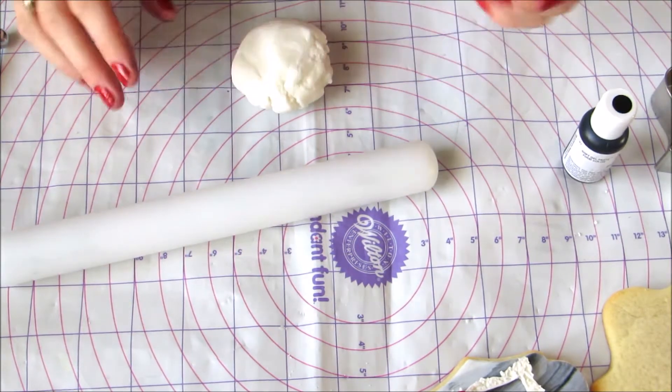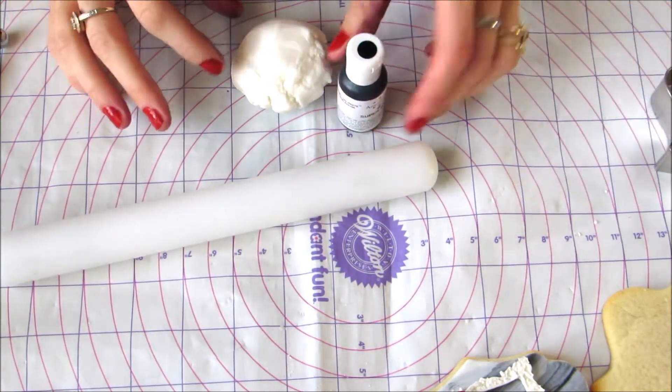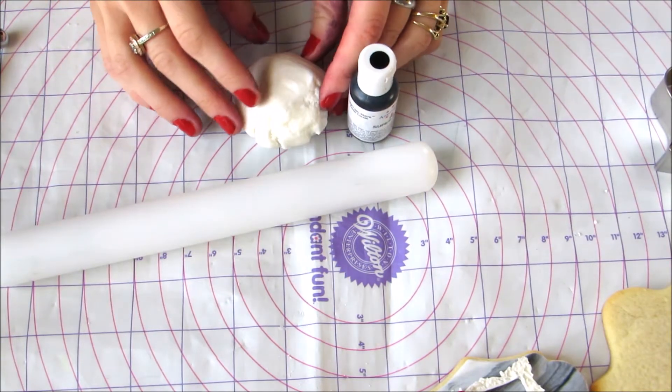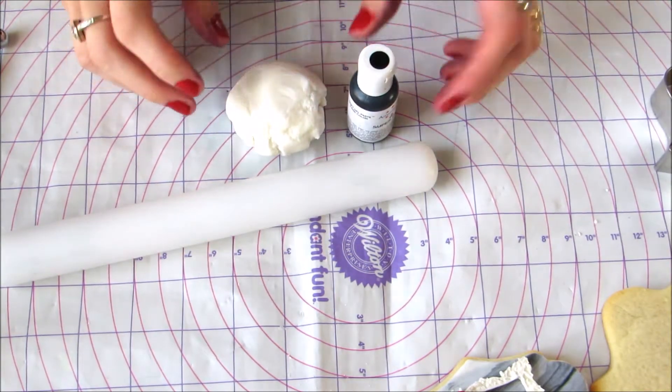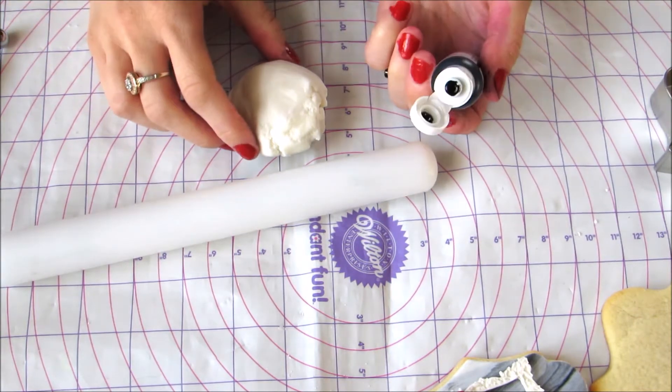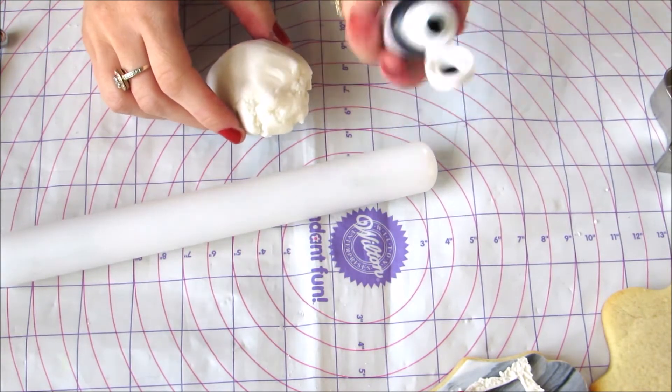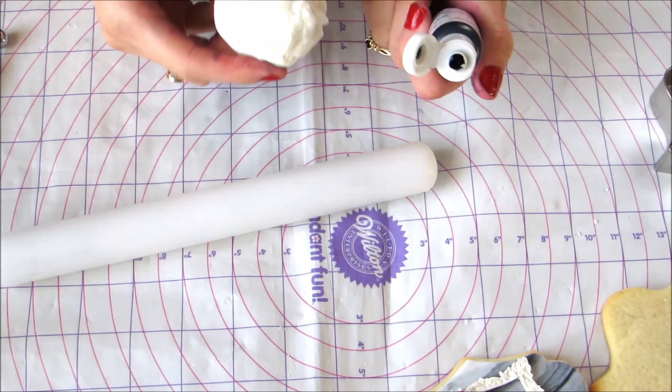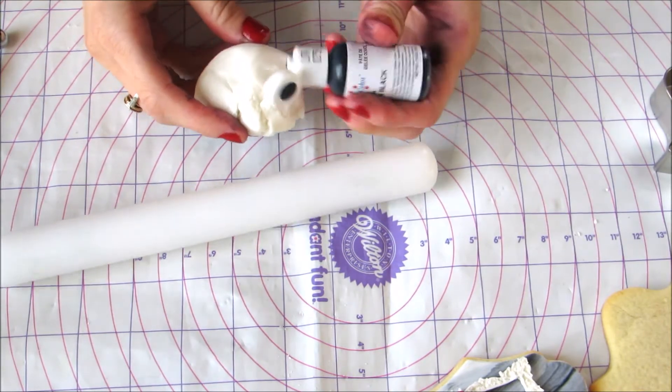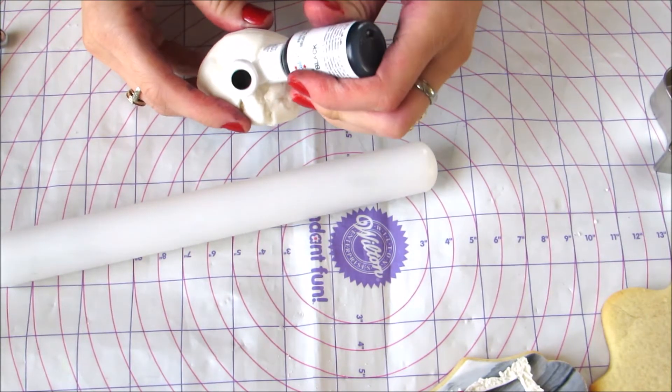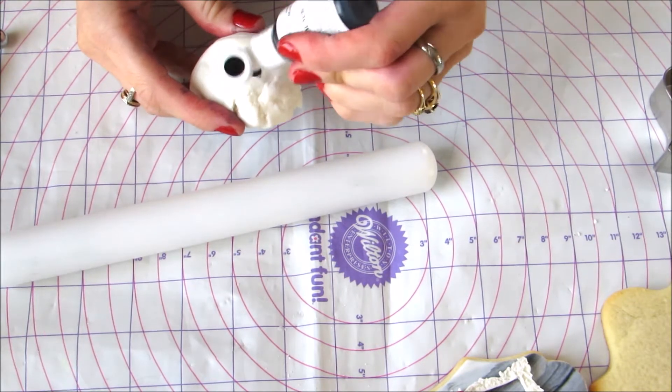I have two ways I do this. One is to take two different colors of fondant and twist them together. Another way is to take your desired food coloring. I'm using AmeriColor on Satin Ice fondant today, and you just want to put a little dab of food coloring on your fondant.